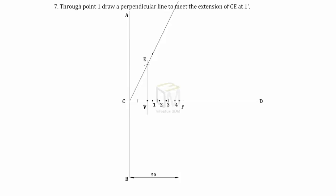Through point 1, draw a line perpendicular to the axis CD so as to meet the extension of CE at 1 dash. Repeat the above step with respect to points 2, 3 and 4.